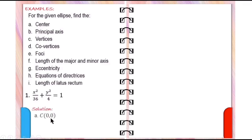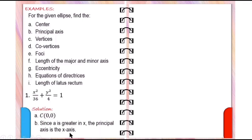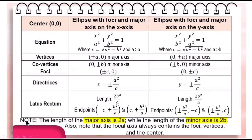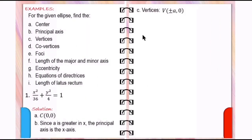The center is at the origin. Since the denominator of the x-squared term, 36, is greater than the denominator of the y-squared term, 4, the principal axis or focal axis is the x-axis. The vertices are plus and minus a, zero, since the principal axis is on the x-axis. We also need to find the co-vertices, foci, directrices, and length of latus rectum — but first, we need to find the value of a.